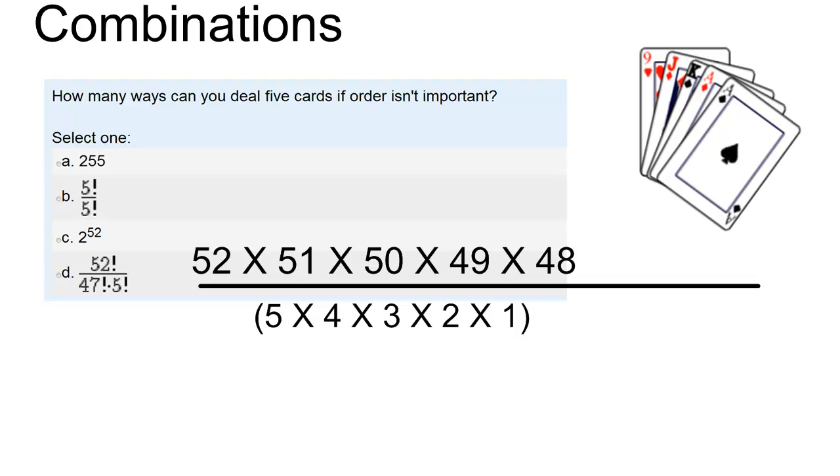You might find this on your calculator, and it may look like this. This is called the choose notation or the combination notation. This means selecting 5 objects from 52 or choosing 5 from 52 where order doesn't matter.